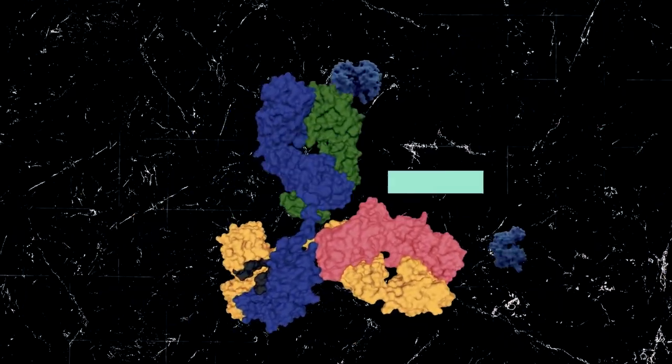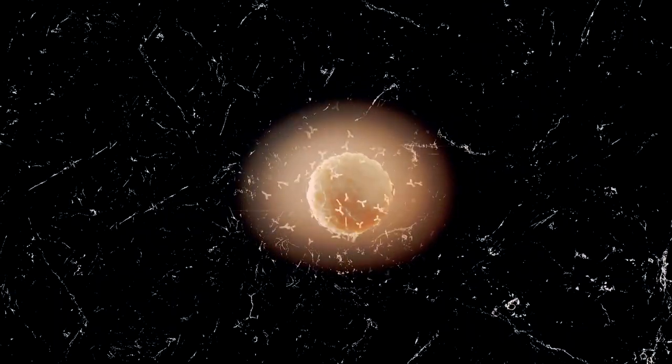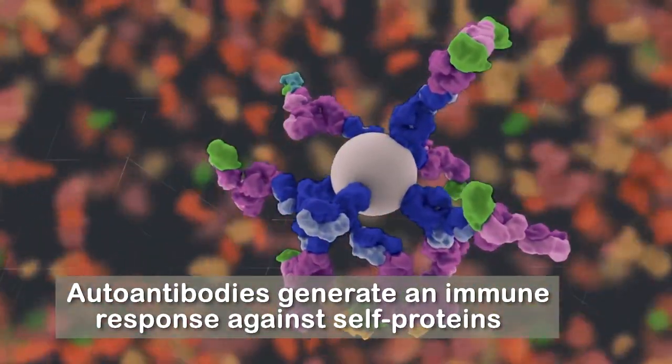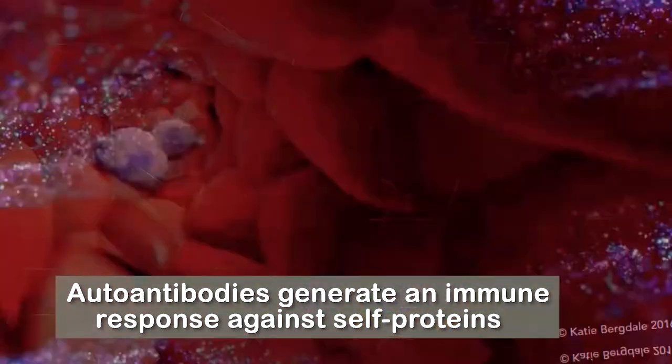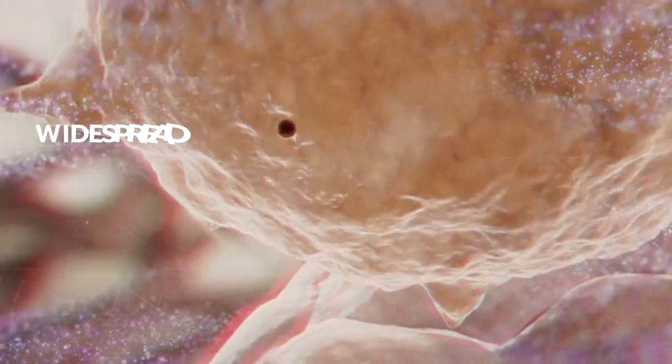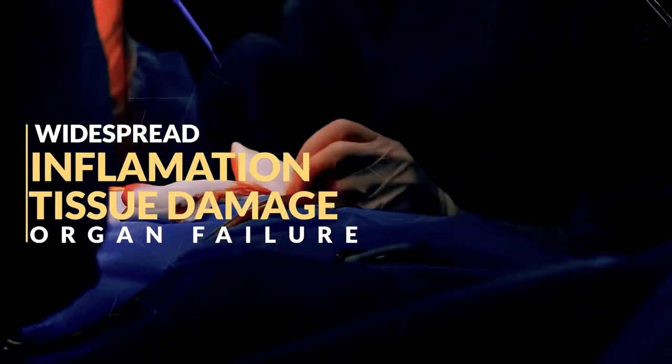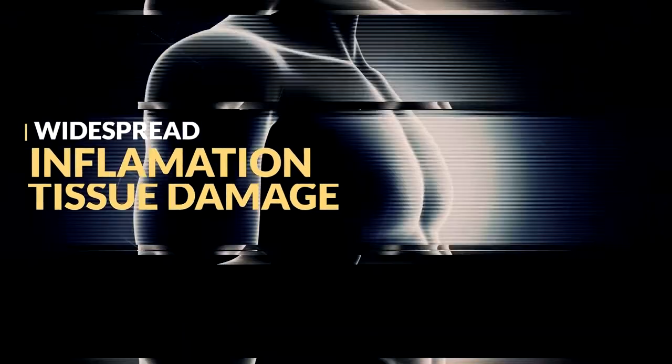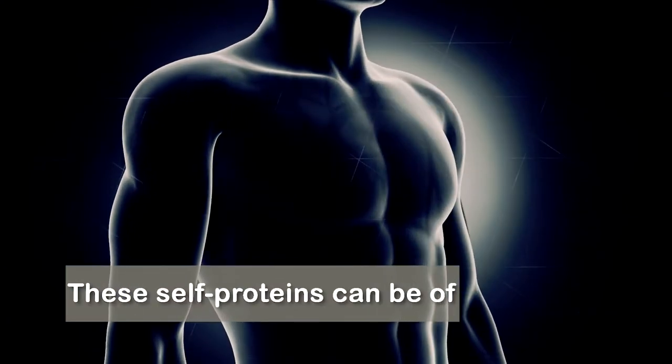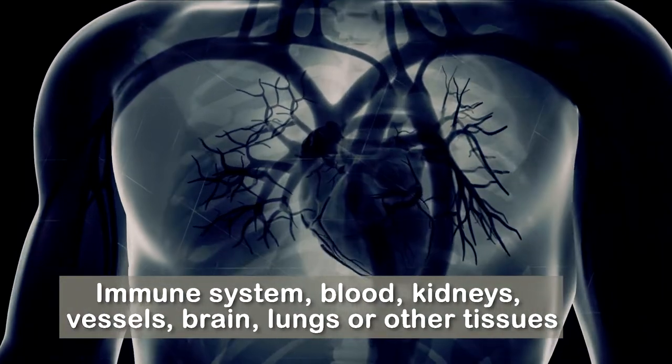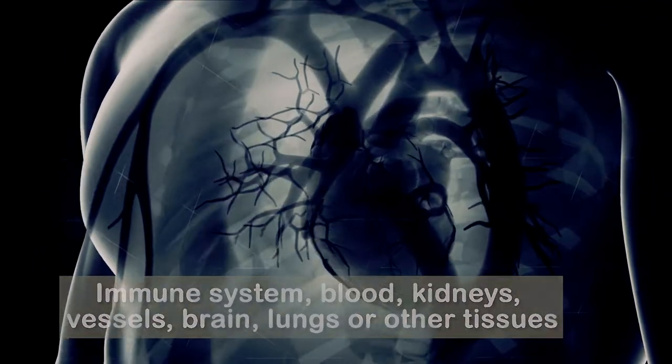When autoantibodies bind to self proteins, they generate an immune response against them. This can disrupt their normal function, cause widespread inflammation and tissue damage, and can lead to multi-organ failure. These self proteins can be of the immune system, blood, kidneys, vessels, brain, lungs, and various other tissues.